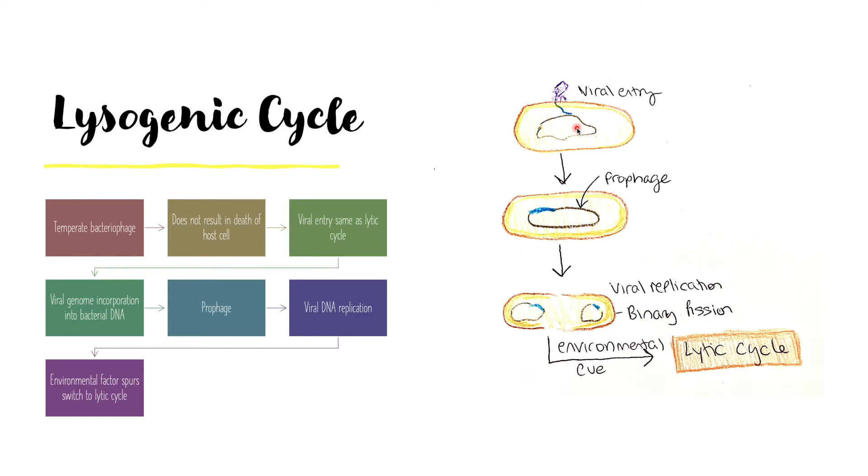Instead of the bacterial DNA disintegrating, the viral genome incorporates itself into the bacterial DNA through genetic recombination. This is called a prophage. Now, as the bacterial DNA replicates itself via binary fission, the viral DNA is also replicated, allowing for the viral genome to spread quickly.